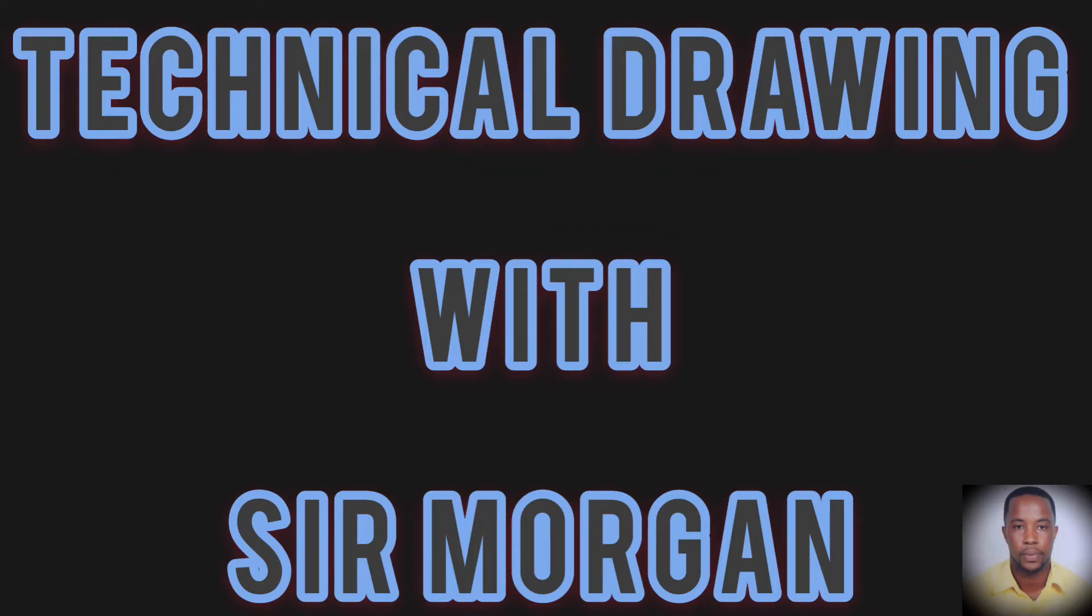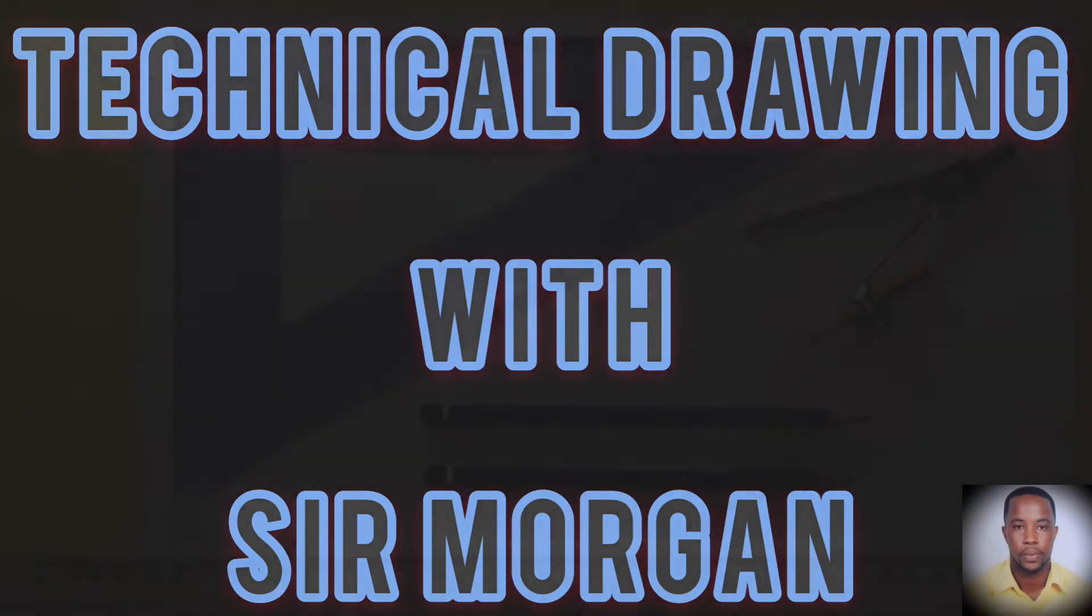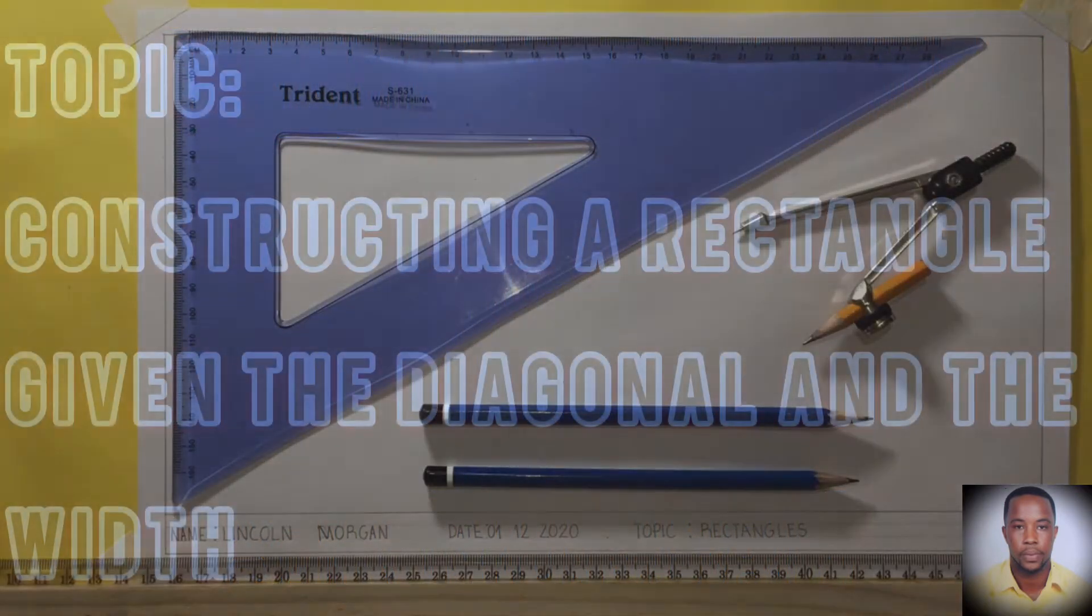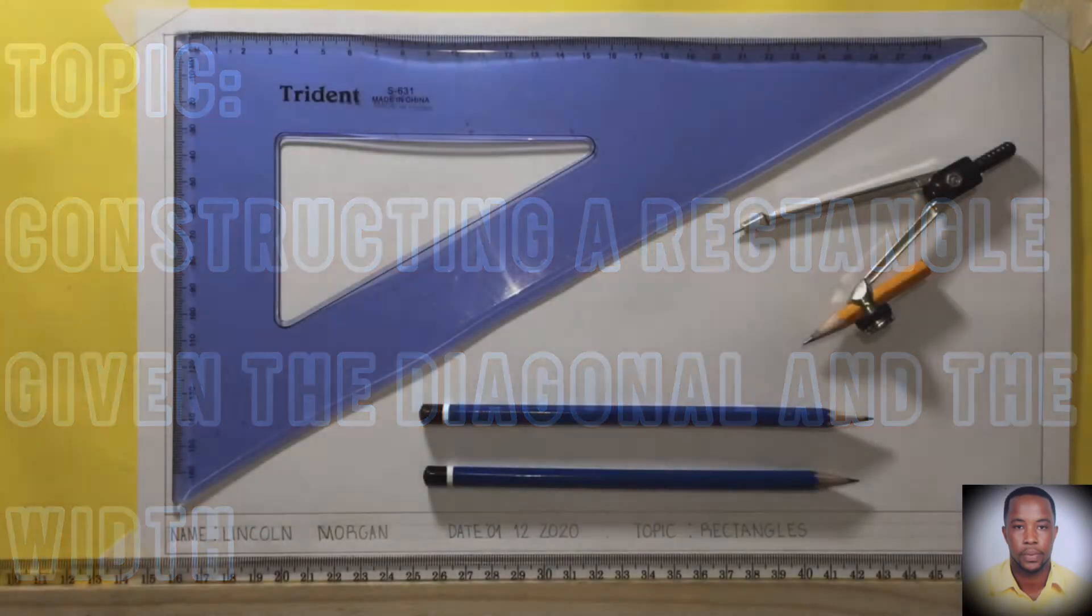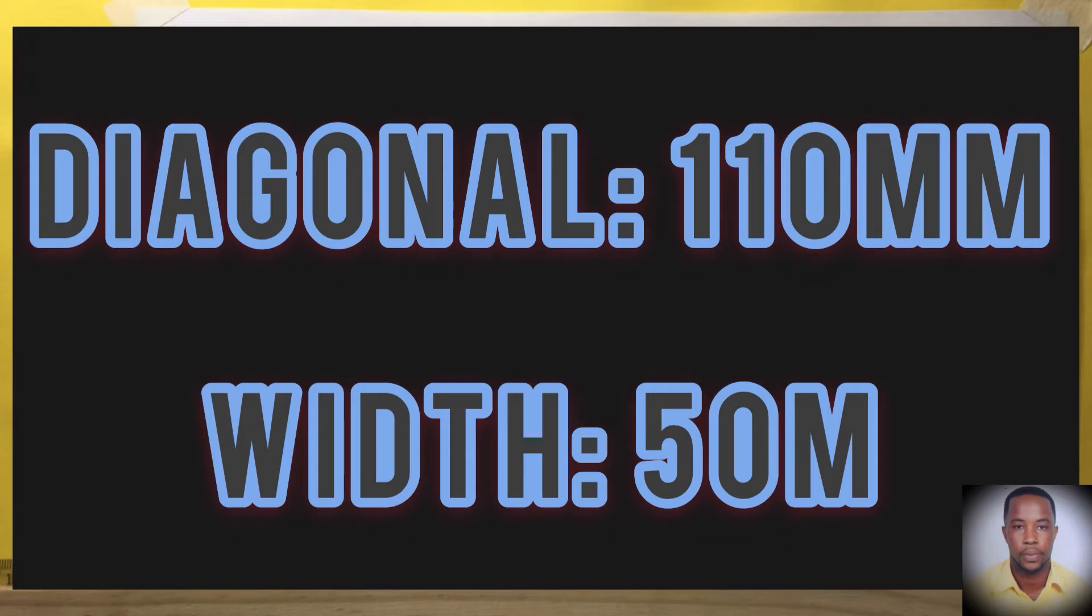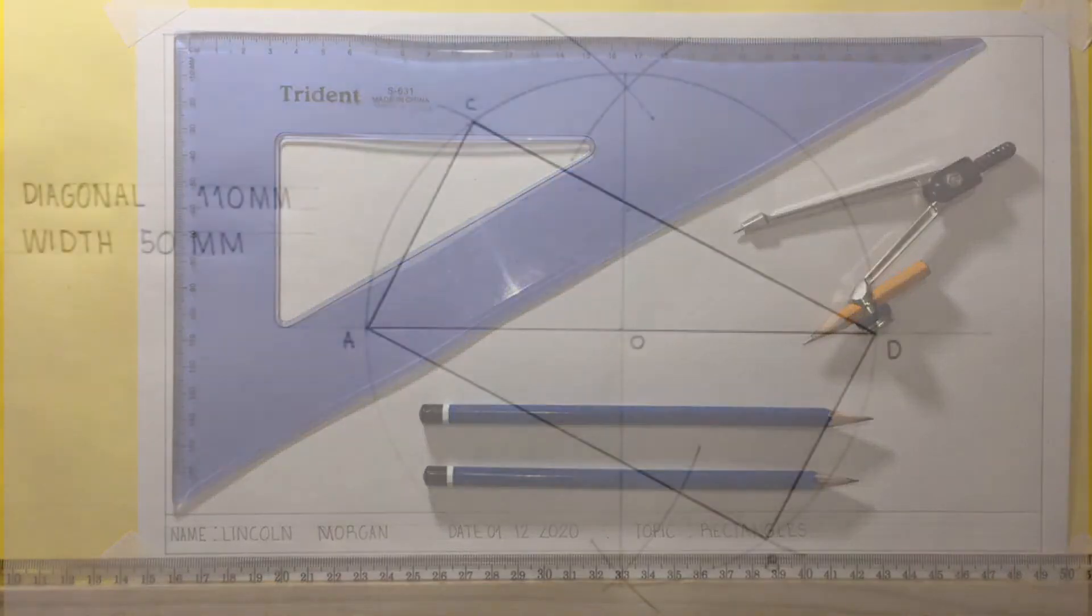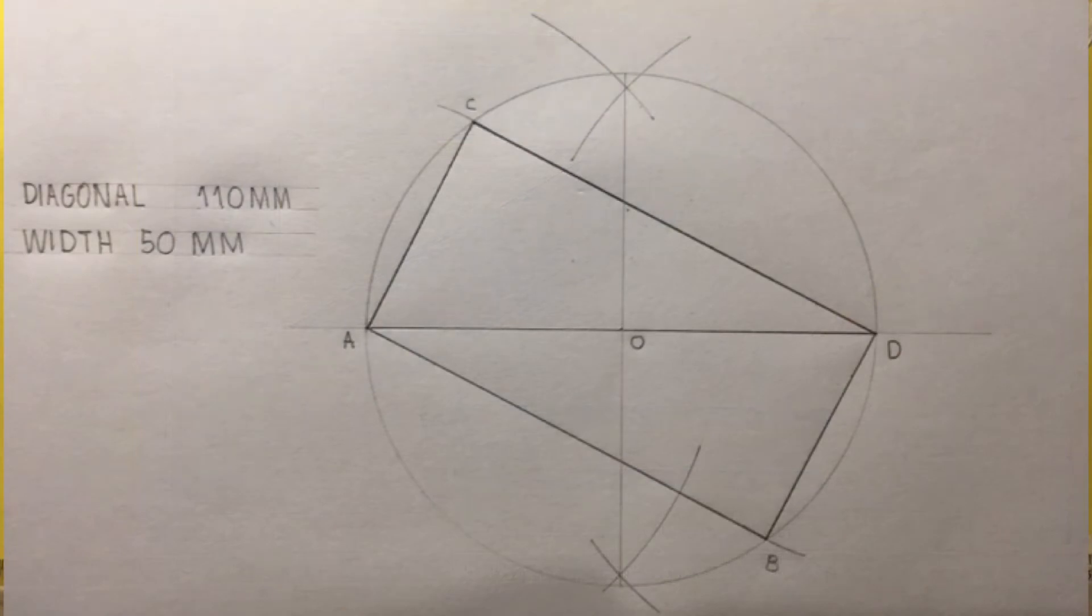Greetings everyone, Sir Morgan here from the technical department. Today I'll be showing you how to construct a rectangle given the length of the diagonal and the length of one side, which will be our width. The diagonal will measure 110 millimeters and the width will be 50 millimeters. I will now draw my diagonal.